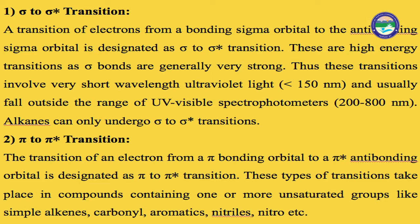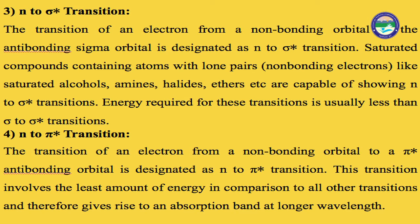The third type is n to sigma star transition — transition of electrons from non-bonding to sigma anti-bonding orbital. The fourth type is n to pi star transition. For non-bonding electrons, a heteroatom must be present in the compound. Heteroatoms such as oxygen, nitrogen, sulfur, and halogens have lone pairs (non-bonding electrons). So n to sigma star transition requires a sigma-bonded molecule with a heteroatom present.